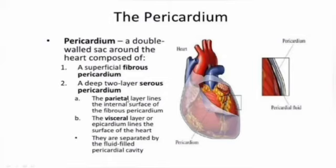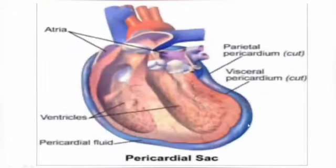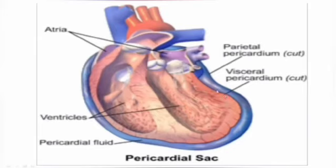Looking at the image, we can clearly see the layers of the pericardium. The outer one is the parietal pericardium and the inner one is the visceral pericardium, which is closer to the organ. The pericardial fluid sits between the parietal and visceral layers, and together this forms the whole pericardial sac.